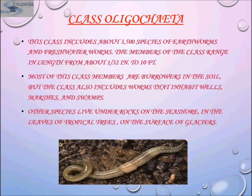Oligochaetes are less varied in external form than polychaetes but are much more numerous — as many as 4,000 oligochaetes have been counted in one square meter of lake bottom. In almost all oligochaetes, the head is simple and cone-shaped, without sensory appendages. Light is detected by photoreceptor cells in the skin, which are usually concentrated towards the front of the animal.